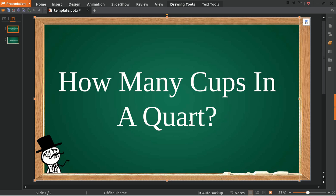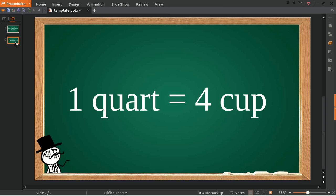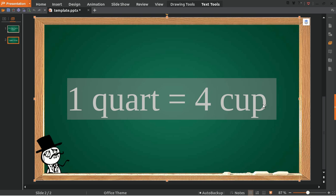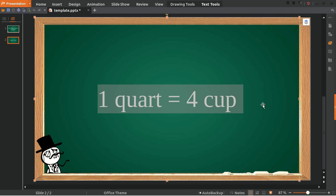A quart is equal to how many cups, right? To answer this question, I actually already have the answer here. This is the formula: one quart is equal to four cups. Okay, actually that's done.